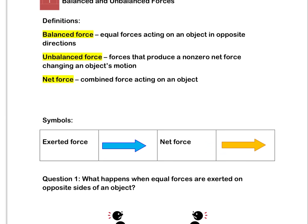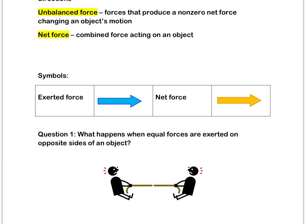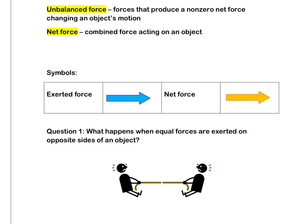Let's look at our first question. What happens when equal forces are exerted on opposite sides of an object? Let's look at our object here. Here we have two individuals, and they're playing tug-of-war. Now, if you notice, neither of them are really going anywhere. Why is that?